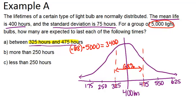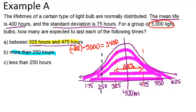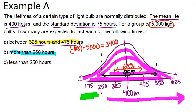Next question: How many would I expect to last more than 250 hours? So I can see that 250 is two standard deviations below the mean. Keep in mind that this whole distribution, the area under all of this adds up to 100%. So if we're trying to find more than 250 hours, that's all of this. I could figure that out by taking 100% and subtracting that from this area right here.